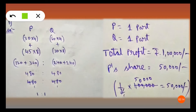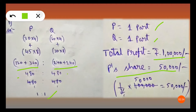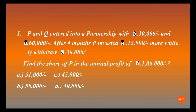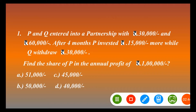After simplification we get 120 plus 360 for P, and 240 plus 240 for Q, giving a ratio of 480 to 480. After cancellation the profit ratio is 1 to 1 — P gets 1 part and Q gets 1 part. The total profit is 1 lakh rupees, so P's share is 1/2 into 1 lakh, which is 50,000 rupees. Option B is the correct answer.